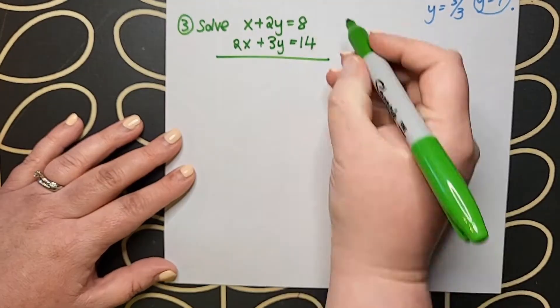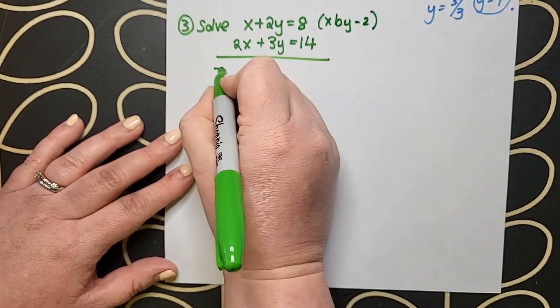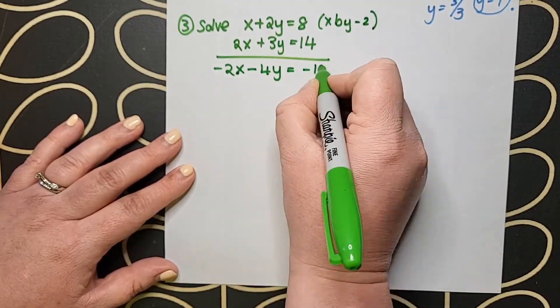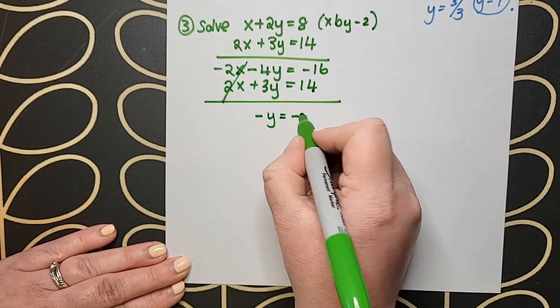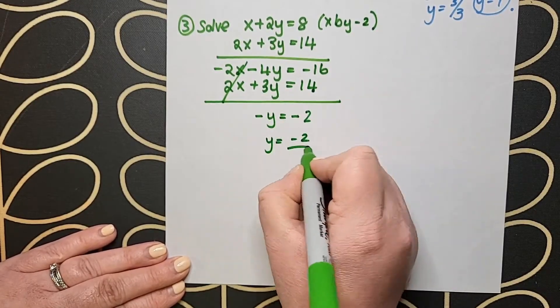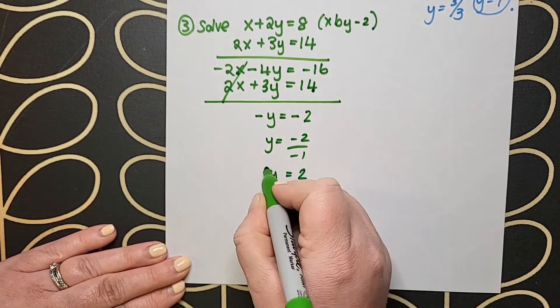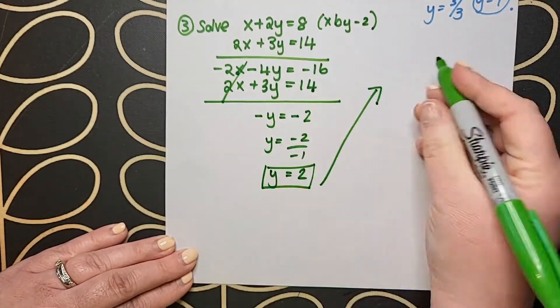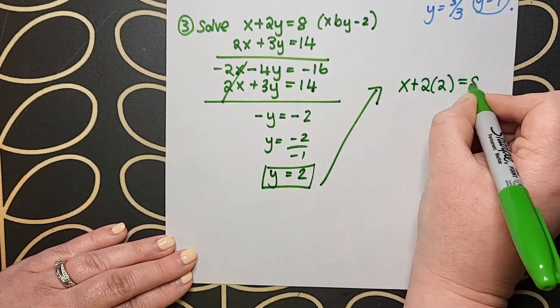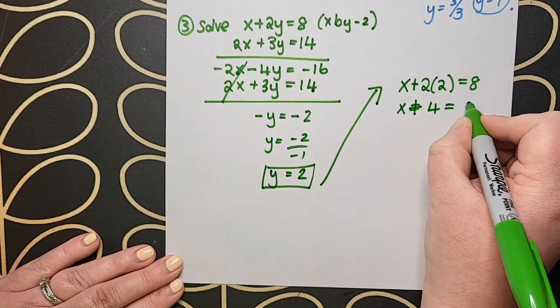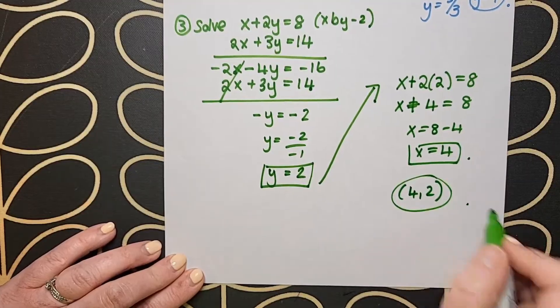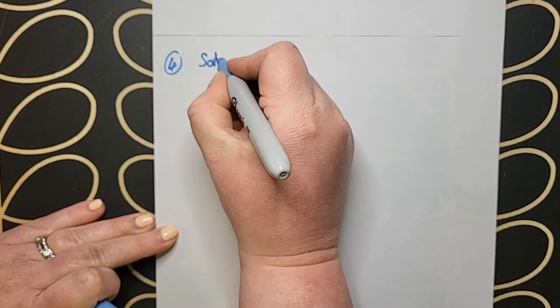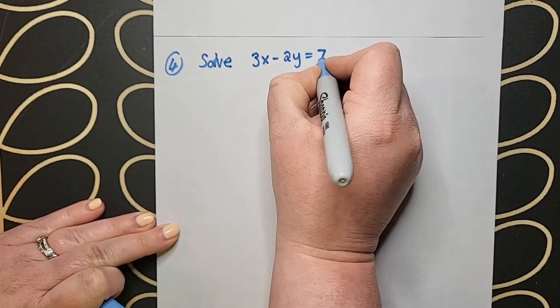Moving on to question 3, I analyze my x's and my y's. I've got an x and a 2x. If I multiply the top equation by minus 2, I will turn the x into minus 2x. When I move on to step two and add the lines together, my x's will simply disappear. I've solved for y equals 2, and in the other part, I find x is equal to 4.